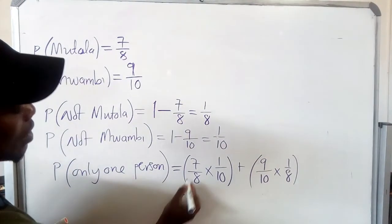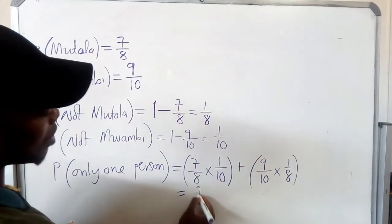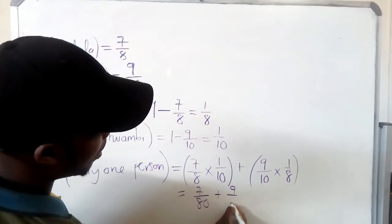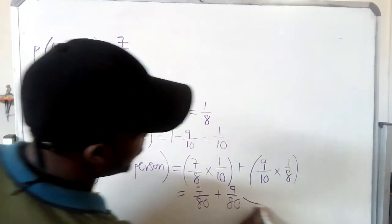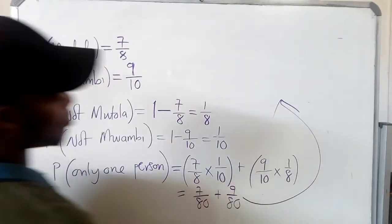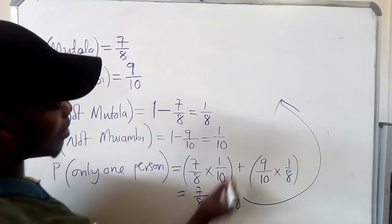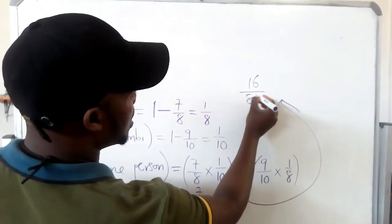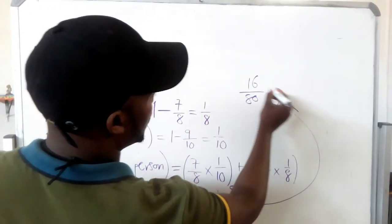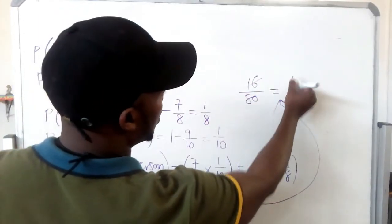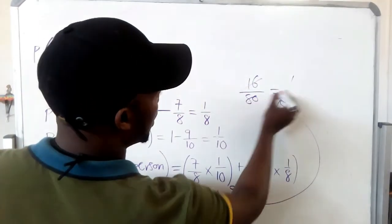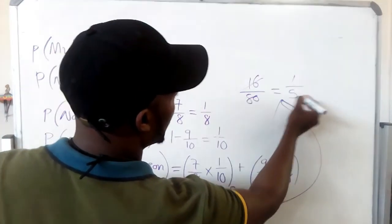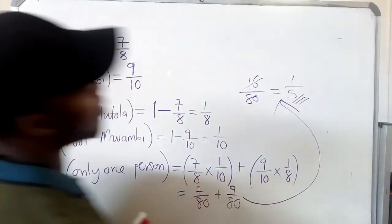When we do our calculations, we have 7 over 80 plus 9 over 80. Adding these gives 16 over 80, which reduces to 1 over 5. So this is our answer.